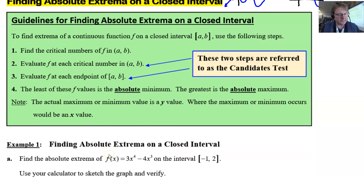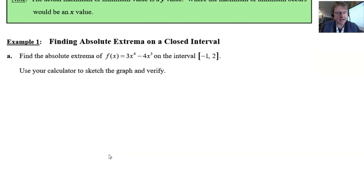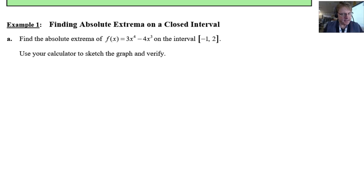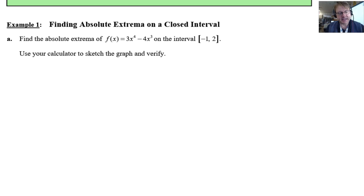Let's take a look at example 1a. I'm going to break examples 1a, b, and c into three separate videos. Find the absolute extrema of f(x) = 3x⁴ - 4x³ on the closed interval [-1, 2]. It says you can use your calculator to sketch the graph and verify — I've already done that at the end of the video, so we'll look at that when we're finished.